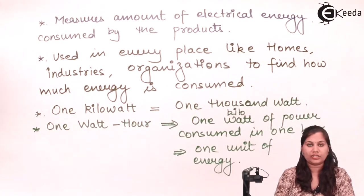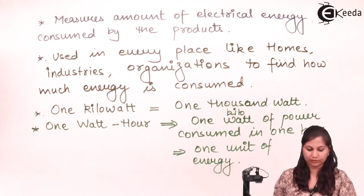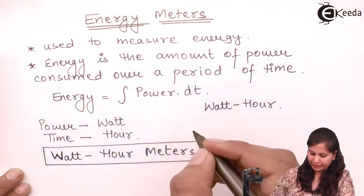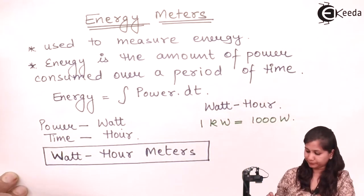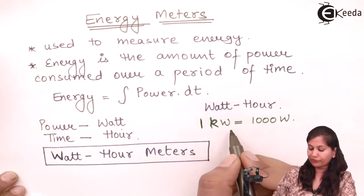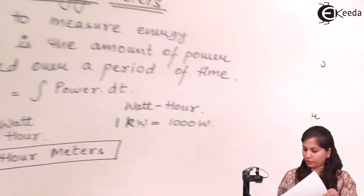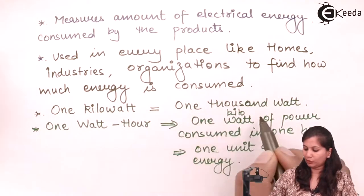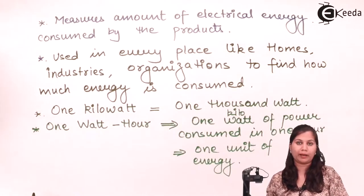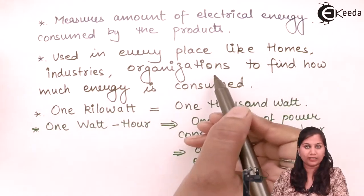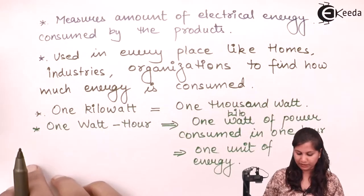Energy is the power consumed in a period of time. The unit for power is watt. One kilowatt equals one thousand watts. If one kilowatt of power is consumed in one hour, that will be equal to one unit of energy. So one unit of energy equals one kilowatt-hour. Whenever we measure the energy consumed by appliances in industries, homes, and organizations, we measure energy in the form of units.